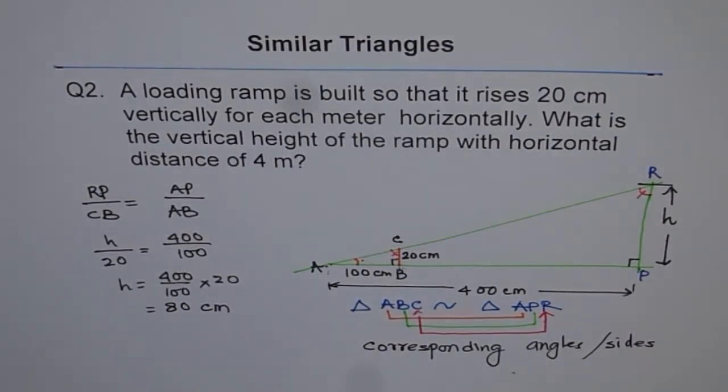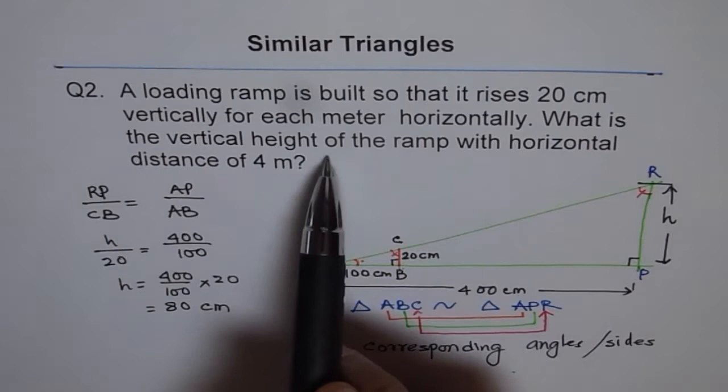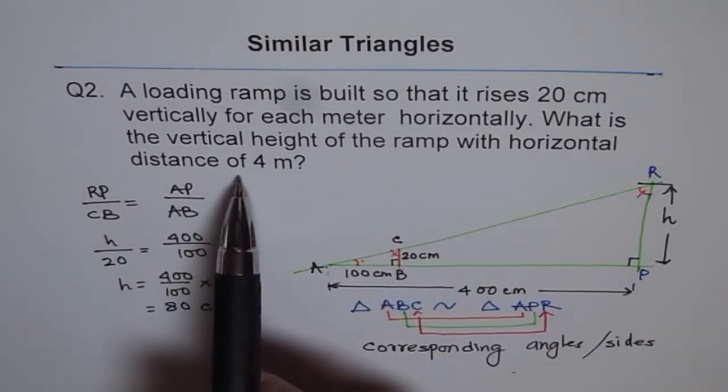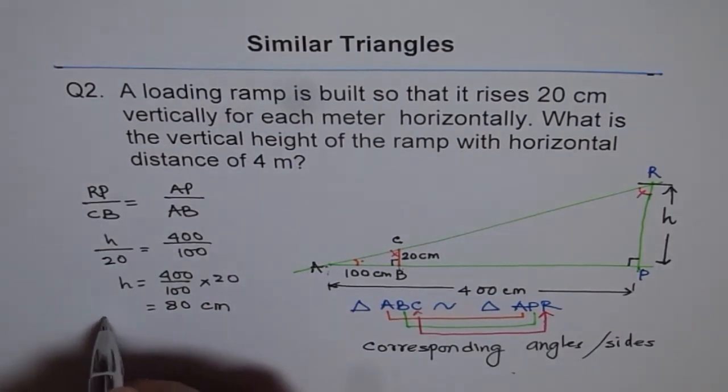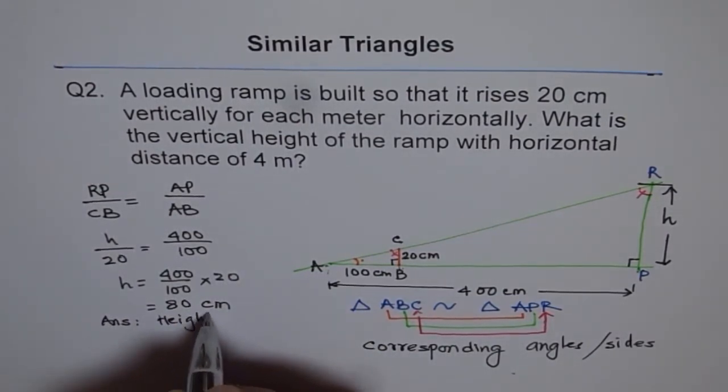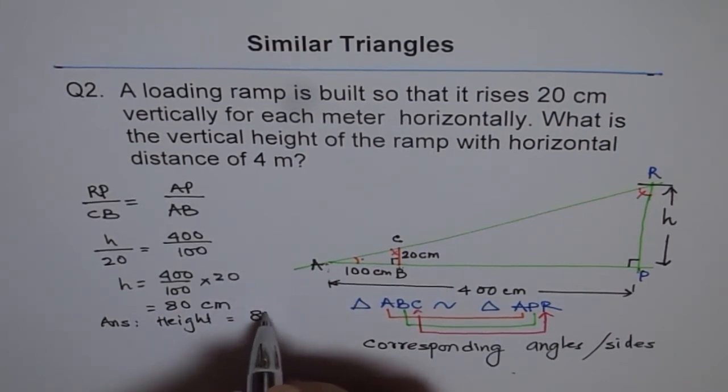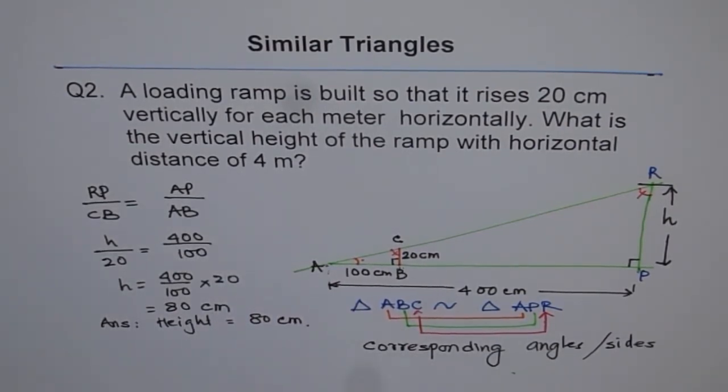We can also write this answer in meters as 0.8 meters if you want. Otherwise the height will be 80 centimeters. So what is the vertical height of the ramp with horizontal distance of 4 meters? The answer is height equals 80 centimeters. Thank you.